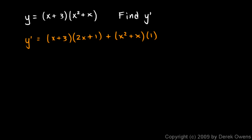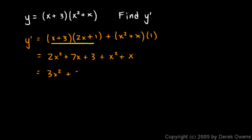This will simplify a bit, and when it simplifies nicely, you should do that. So let's FOIL: we get 2x squared, and then our outer terms give us plus x and plus 6x, so that's plus 7x plus 3, plus x squared plus x. That works out to 3x squared plus 8x plus 3.